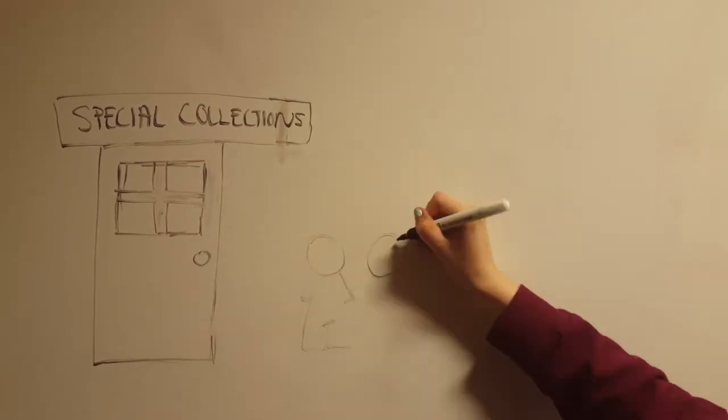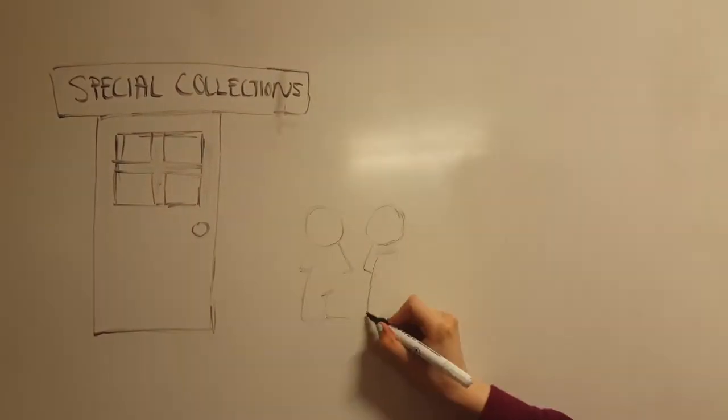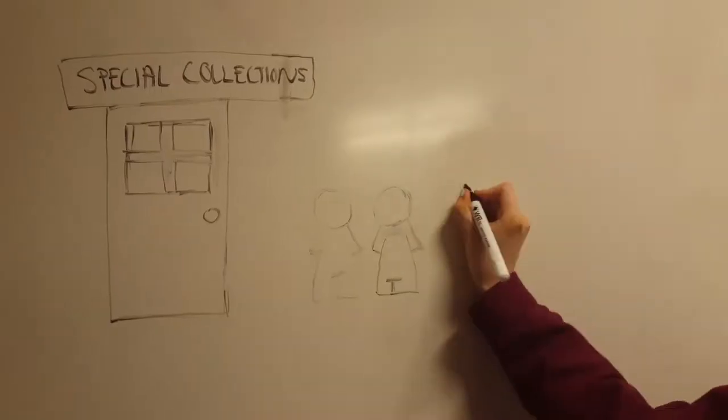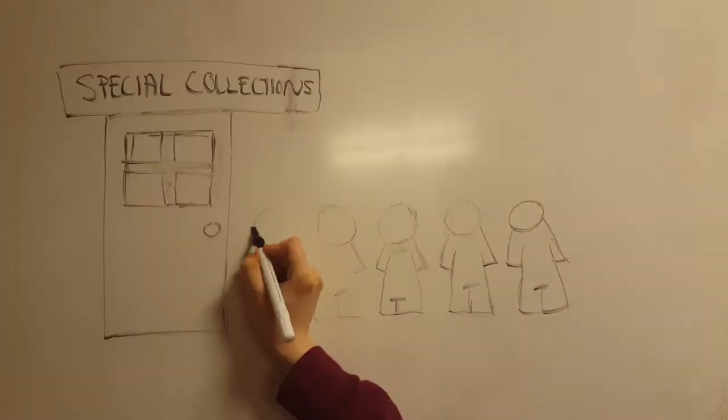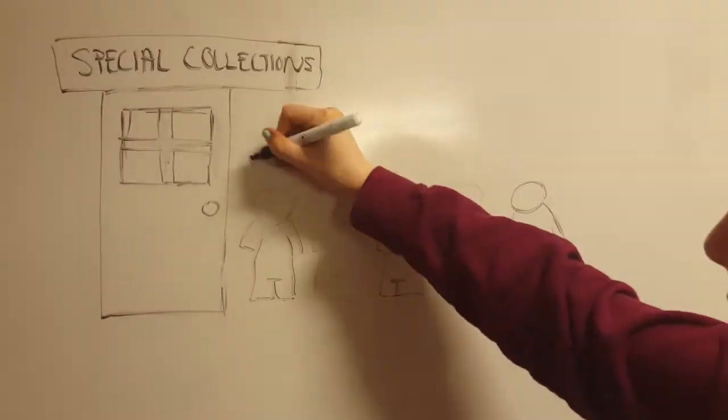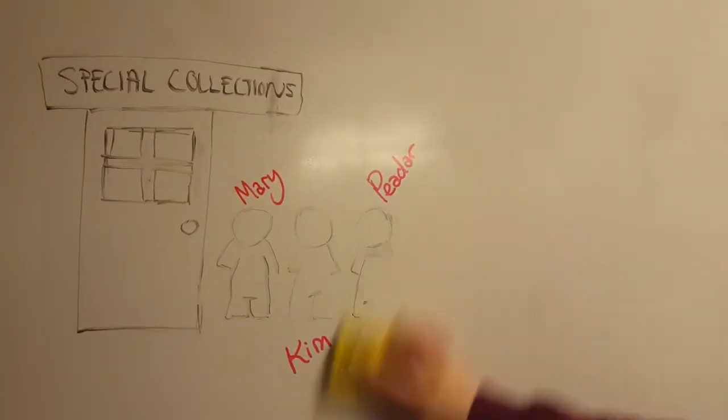So for our project, we were all split into groups of five. Our group is made up of five first-year music students in UCC, and our names are Mary, Kin, Padre, Fiona, and Áine.